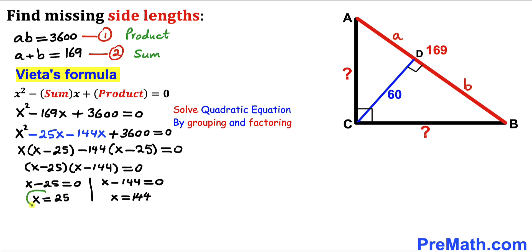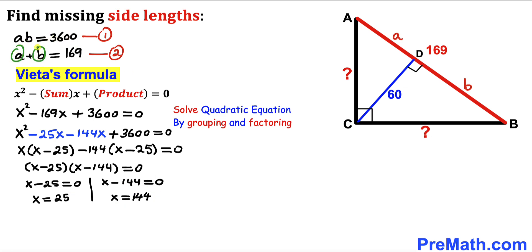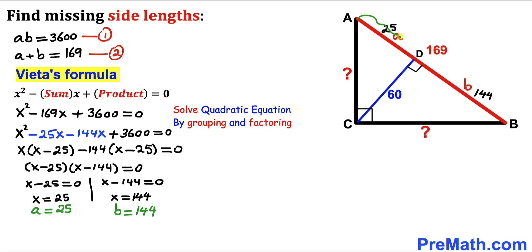So for the first equation x equals positive 25, and for the second equation x equals positive 144. We get two roots: 25 and 144. Since our roots are a and b, a equals 25 and b equals 144. In other words, segment AD is 25 units and segment BD is 144 units.